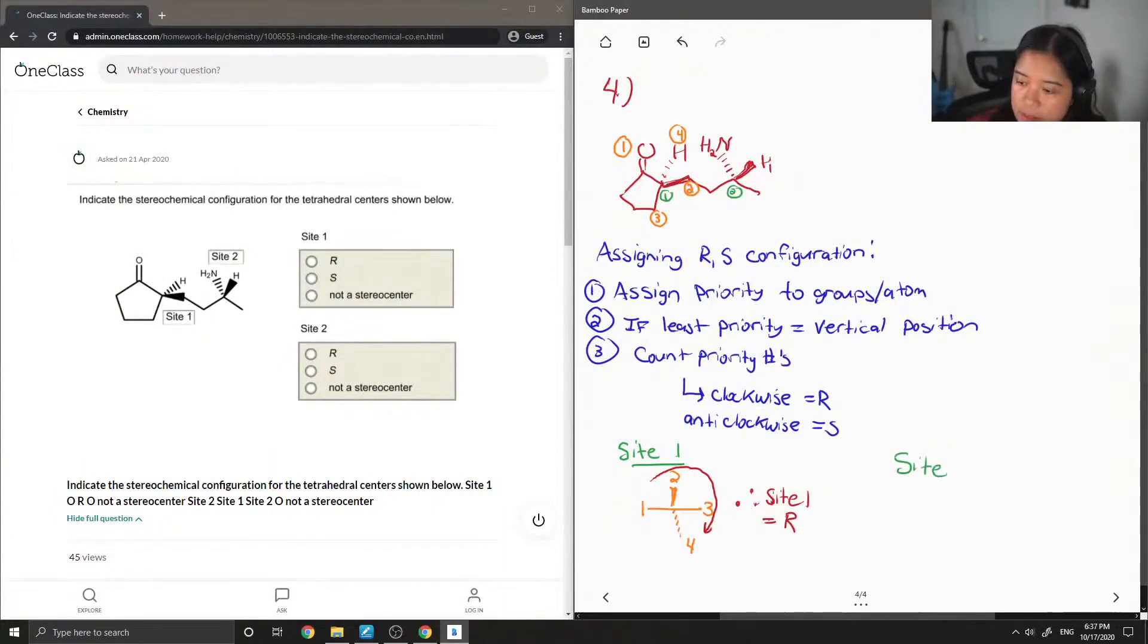Okay, so we're going to do the same thing for site two. I'll use a different color. And then we're just going to number the priorities. So in this case, nitrogen is the first priority one. This larger carbon group is two. And this little methyl group is three. And again, the hydrogen has the lowest priority.